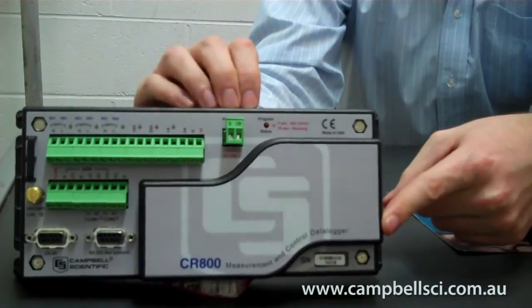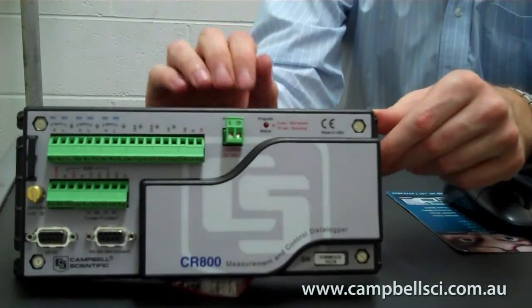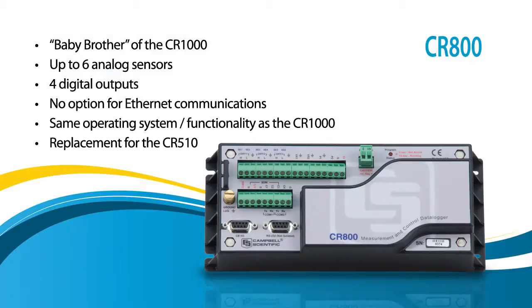The CR-800 is also missing a peripheral port, so you can't connect an Ethernet cable to this one and you can't expand its memory with a compact flash card. Otherwise, the programming is the same — it uses the same programming language and all the same instructions are supported. It supports DNP3 and Modbus as well. For those of you used to the older loggers, this has replaced the CR-510.